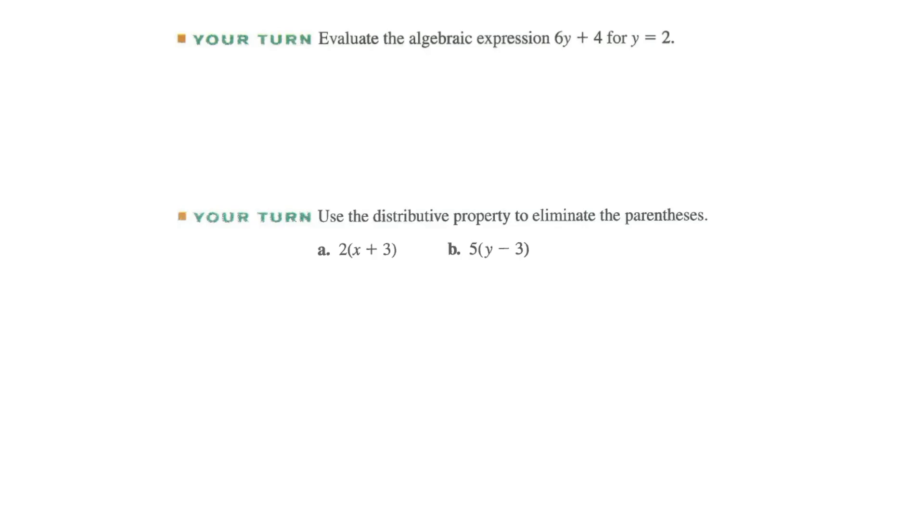Let's use some of these properties and see if we can evaluate some of the algebraic expressions. Give these a shot. If we did this correctly, we would have 6 times 2 plus 4, which is 12 plus 4, which is 16. And if we distribute this, 2 times x is 2x, and 2 times 3 is 6. And same thing here. 5y minus 5 times 3 is 15.